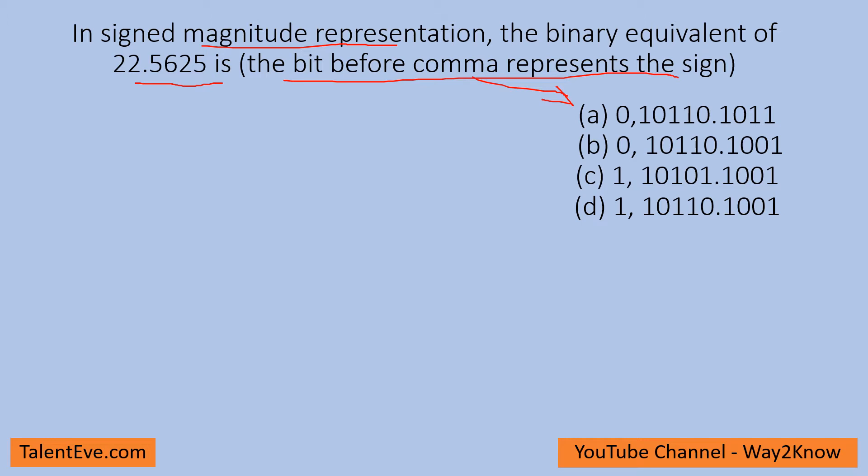The binary equivalent number. Now 22.5625 is a positive number, that means the first number will always be zero. So the options would be either of these. This is how we will come up with it. It would be zero comma.